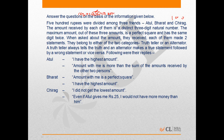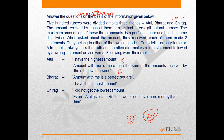Atul says his first statement is 'I have the highest amount.' His second statement is 'The amount with me is more than the sum of the amounts received by the other two.' Since the highest amount is 225 and the other two together receive 275, no one's amount exceeds the sum of the other two. So Atul's second statement is false, making his first statement true — Atul got 225.